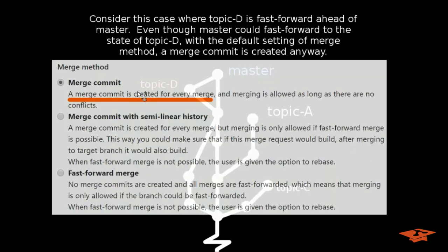So here I'm just pointing out that with this methodology, a merge commit is created for every single merge, even if it's fast forward ahead, making the tree look a little funky if you're not expecting this behavior.